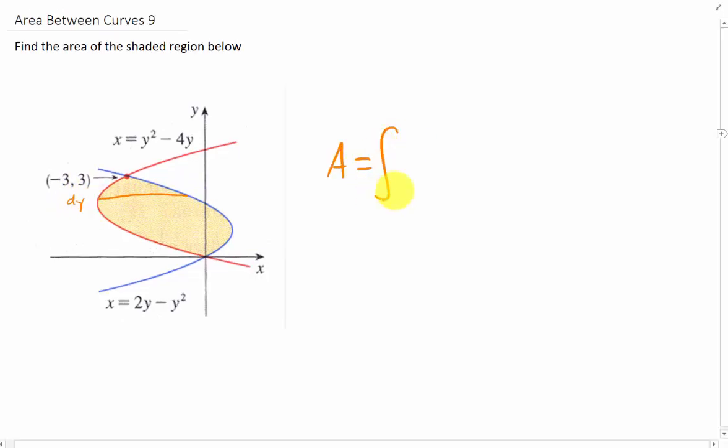What that's going to look like is an integral of the rightmost function, that's 2y minus y², minus the leftmost function, which is y² minus 4y, and we're going to integrate that with respect to y.